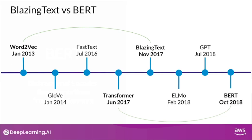Before diving into the BERT algorithm, I will highlight a few differences between BlazingText and BERT at a very high level. BlazingText is based on Word2Vec whereas BERT is based on transformer architecture. Both BlazingText and BERT generate word embeddings, however BlazingText operates at word level whereas BERT operates at a sentence level. Additionally, using the bi-directional nature of the transformer architecture, BERT can capture context of a word.